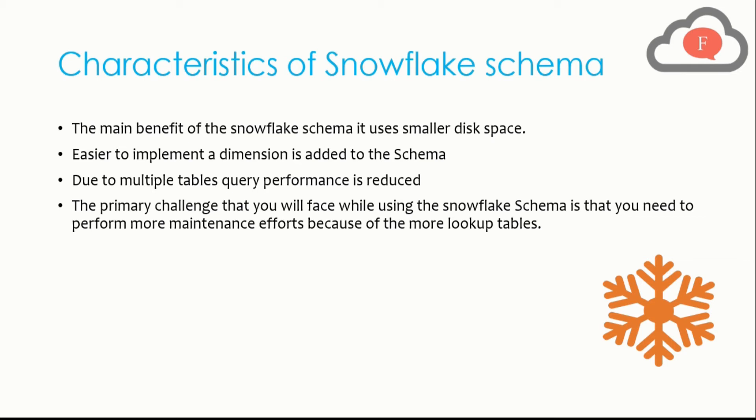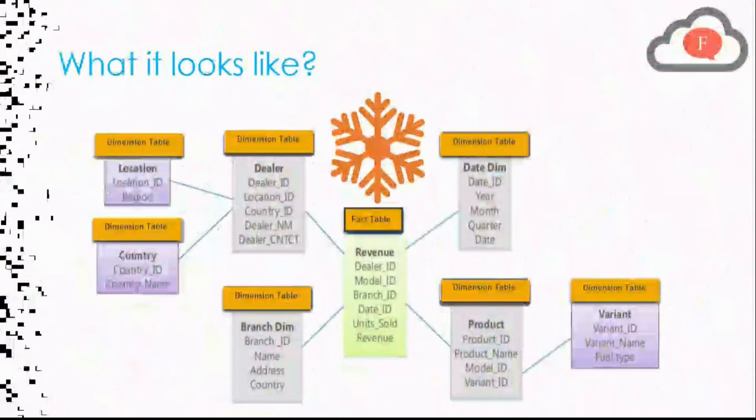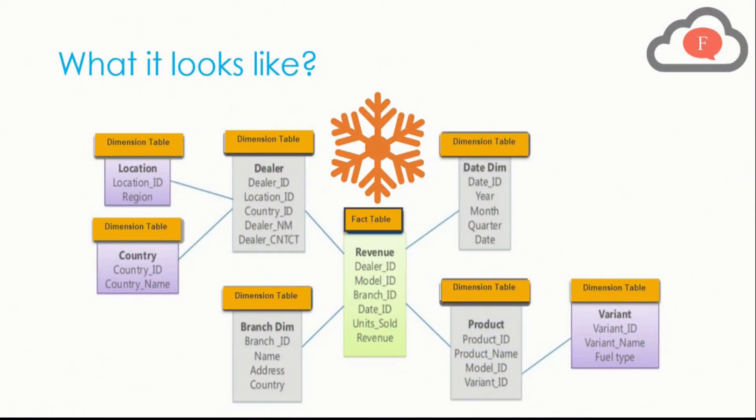Before going there, I will show you what the snowflake schema naturally looks like. So here if you see, this is a fact table. The fact table is connected with dimension tables. If I just separate this from the other tables, these three would simply look like a star schema.